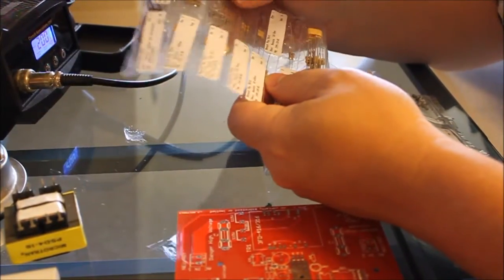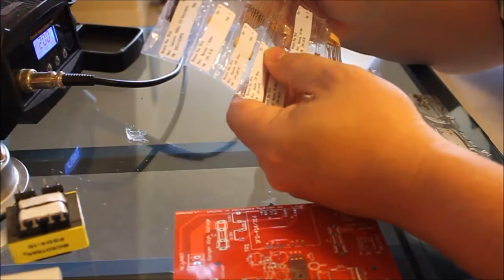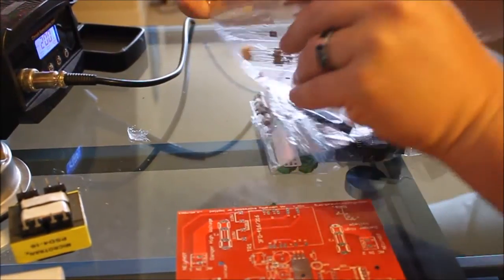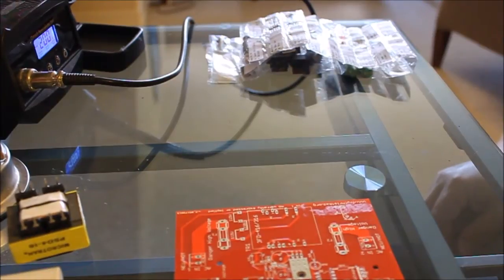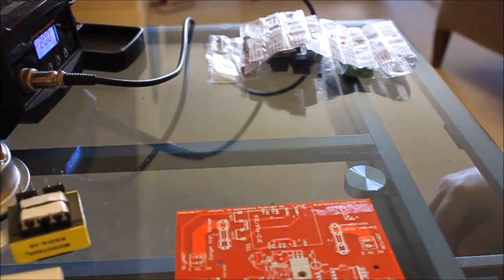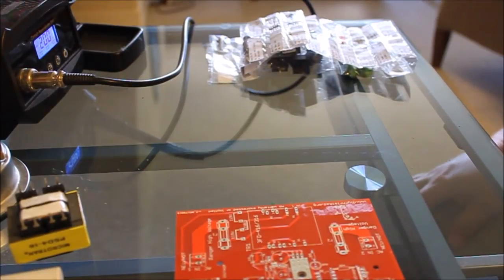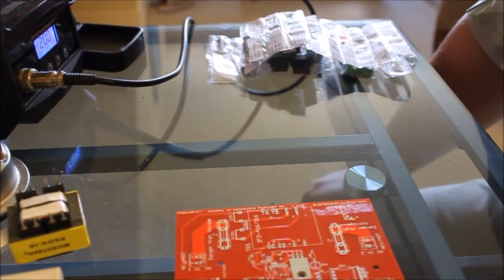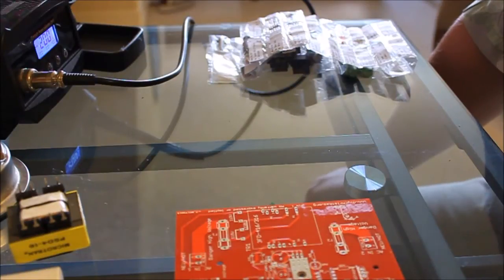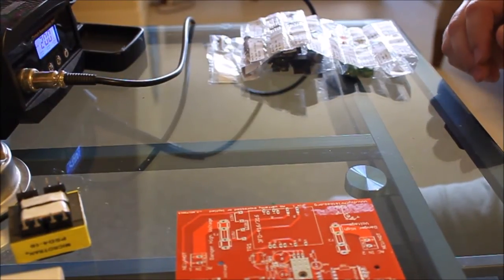First thing you want to do is look at your parts. This quantity says three 330 ohm resistors. Turn the bag over and make sure you got three of them. The first question people ask me is how hard is this? Well, it's not hard at all. It just takes some practice. It takes a decent soldering station. Actually, I'll take that back—it takes a good temperature control soldering station.